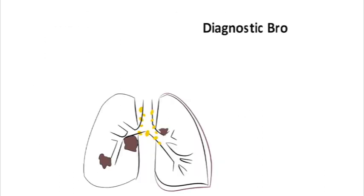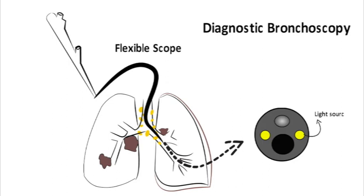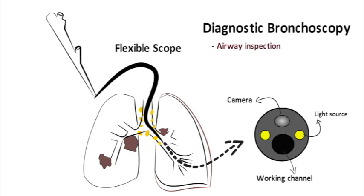Standard diagnostic bronchoscopy may be performed in a variety of settings. This procedure is performed using a flexible scope that has a light source, a camera, and a working channel that allows the practitioner to perform a variety of tissue sampling techniques. All bronchoscopies start with a thorough airway inspection, where the scope is directed to systematically visualize the lung segments and anatomy. This is usually followed by one or more tissue sampling techniques. One of the most common sampling techniques is bronchoalveolar lavage, or BAL.